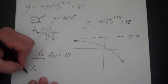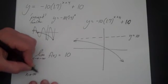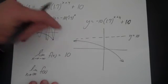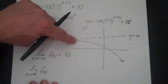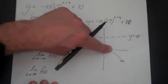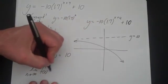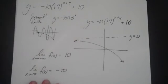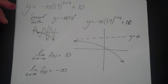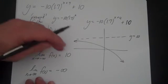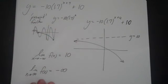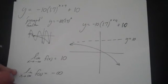The limit as x goes to positive infinity of f(x): as x goes to positive infinity, what happens to y? It gets more and more negative, so that goes to negative infinity. That's what makes this fairly easy — you only have three possible answers: the asymptote, positive infinity, or negative infinity. In this case, the answers are 10 and negative infinity.